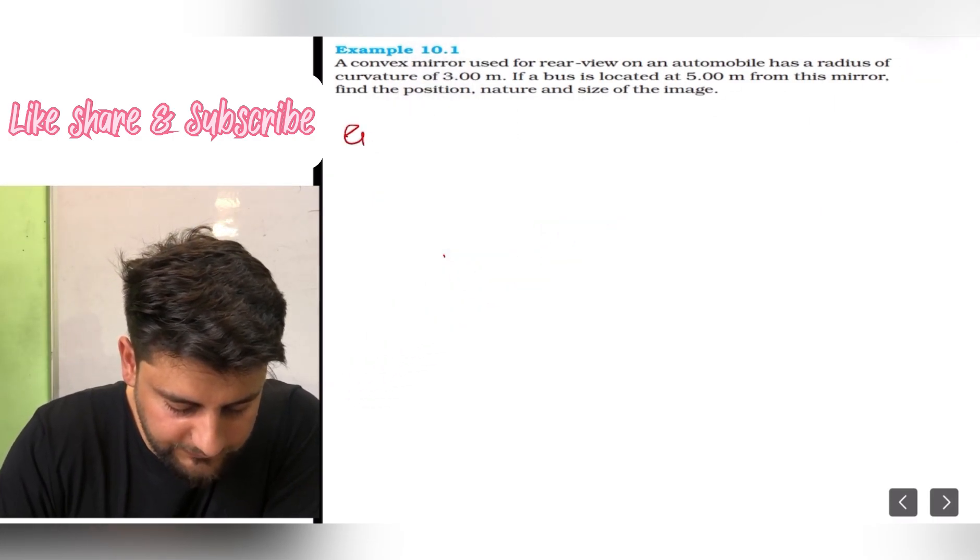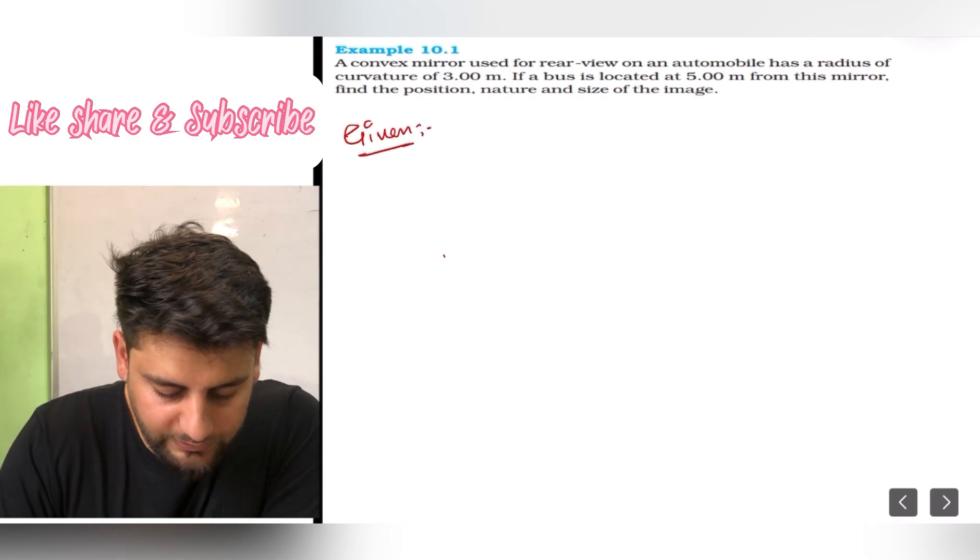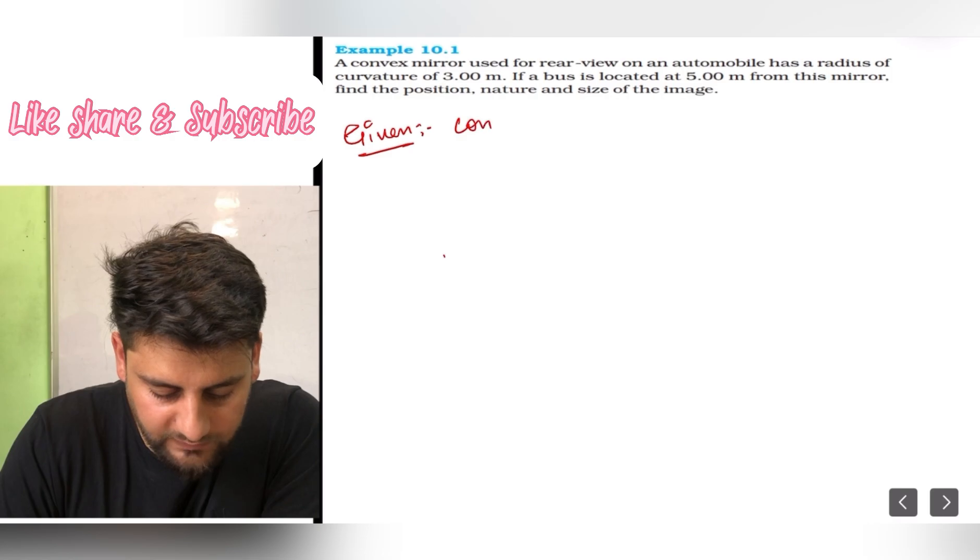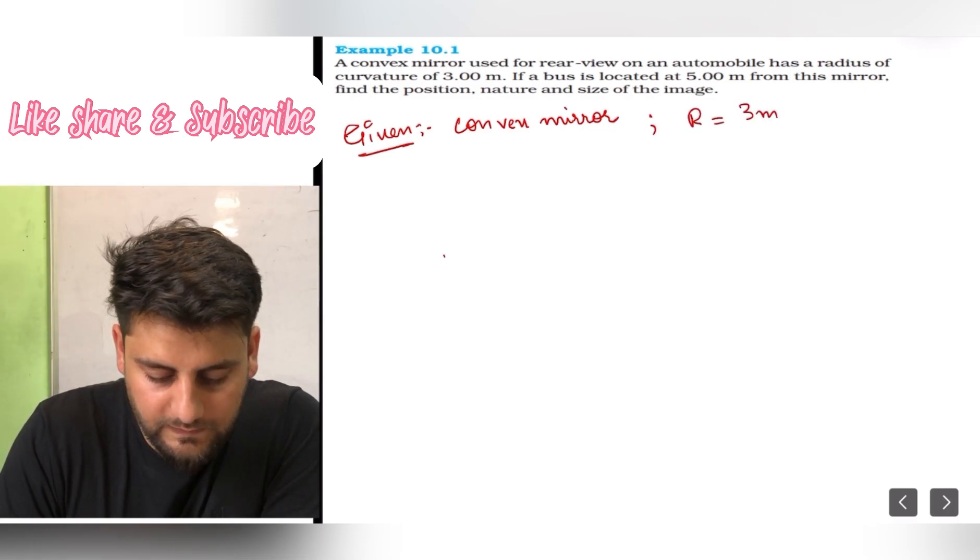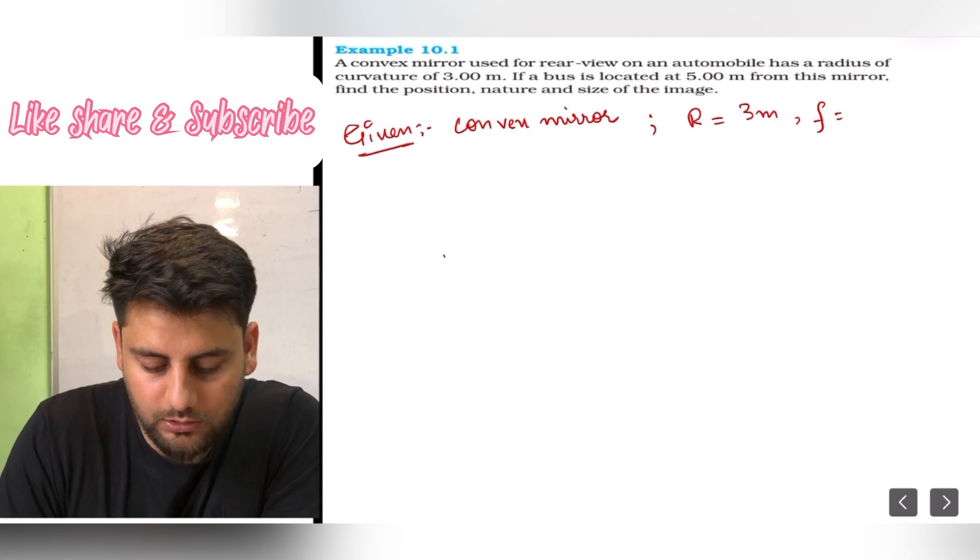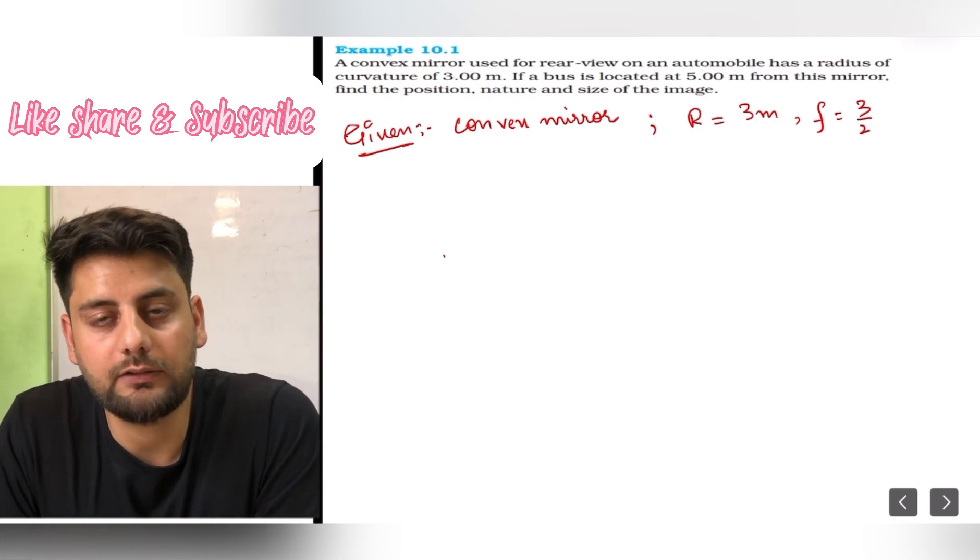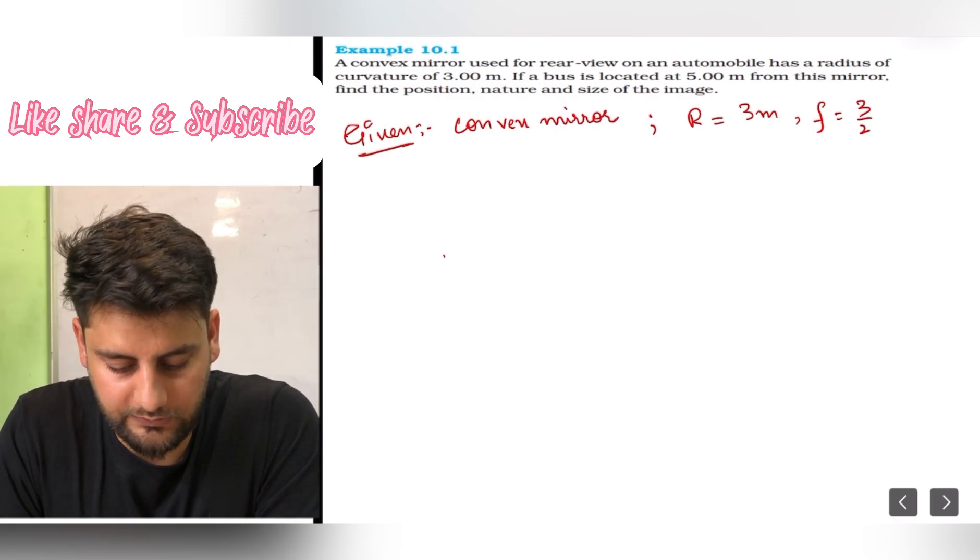In given, we have been told that convex mirror hai, and its radius of curvature is given, r, that is 3 meter. So its focal length will be 3 by 2, because focal length is half of radius of curvature, 3 by 2 meter.